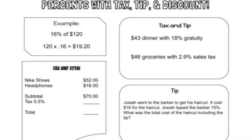Today we're going to be doing tax, tip, and discount. First, a reminder: when we're finding the percent of a number, we change the percent to a decimal. The word 'of' means to multiply by that number. So 16% of 120 is 19.20.